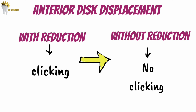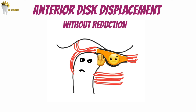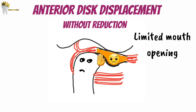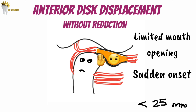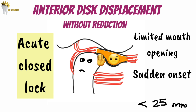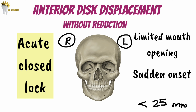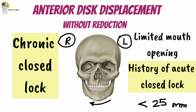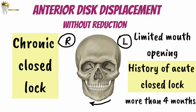Since the disc is not allowing the condyle to move over the articular eminence, there will obviously be limited mouth opening. If this happens suddenly and there is limited mouth opening of less than 25 mm, it's called acute closed lock. If the disc displacement has occurred on the right side, the mandible will deflect to the right side and lateral movements to the left side will be limited. Whichever side the disc displacement has occurred, the mandible will deflect to that side and lateral movement to the opposite side will be limited. In chronic closed lock, there will be a history of sudden onset of limited mouth opening — meaning the patient had acute closed lock that stayed that way for a long time. When it's over 4 months of limited mouth opening, it's considered chronic closed lock.